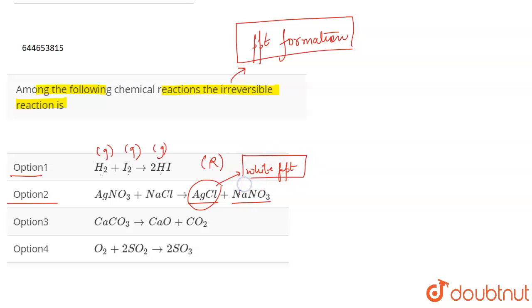So this reaction is going to be an irreversible reaction and the correct answer for the question. Now if we talk about the next one, which is CaCO₃ → CaO + CO₂, here this is a solid.